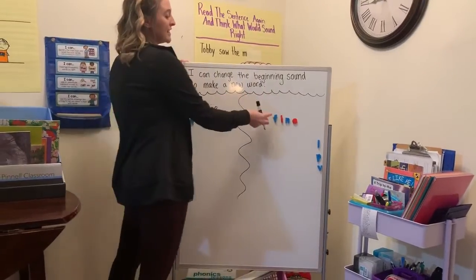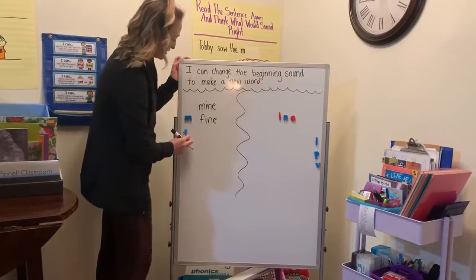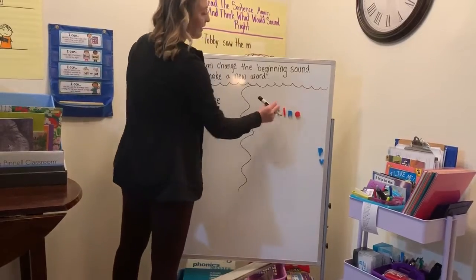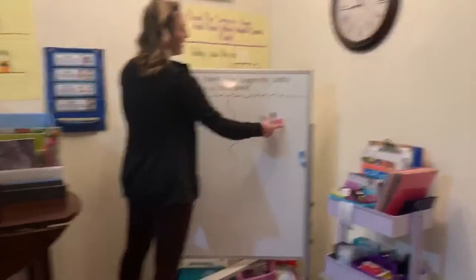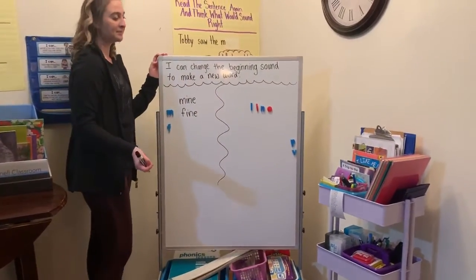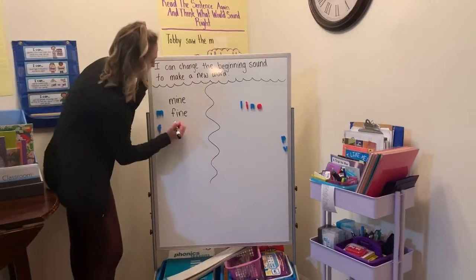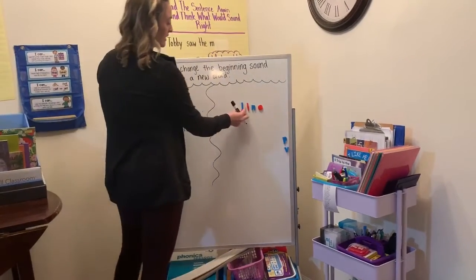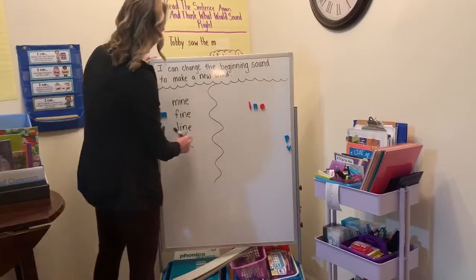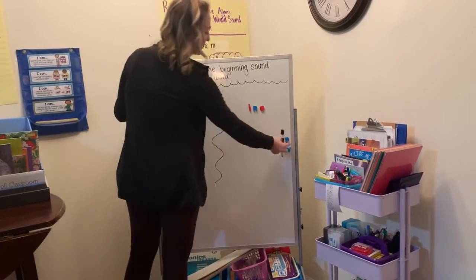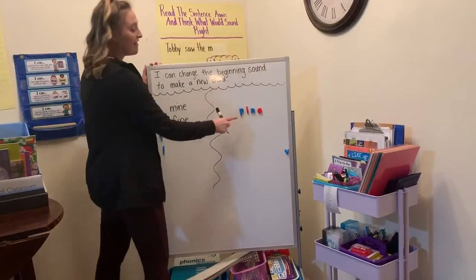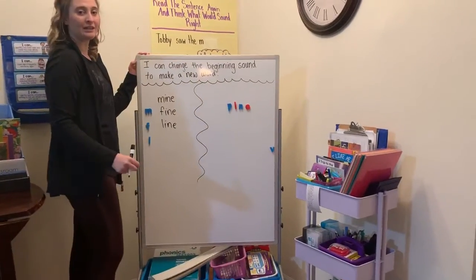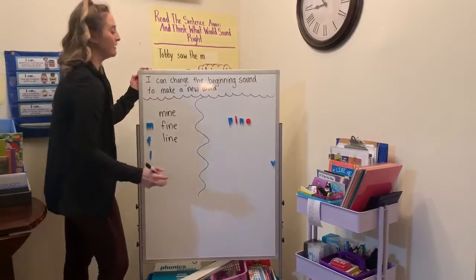Now if I take away my F and I replace it with an L, I have L-I-N. What word is that? Line. And if I take my L away and I replace it with a P, I have P-I-N. What word is that? Pine.